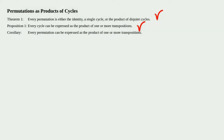Today we're going to continue our discussion by proving the corollary to Theorem 1 and Proposition 1. The corollary states that every permutation can be expressed as the product of one or more transpositions.